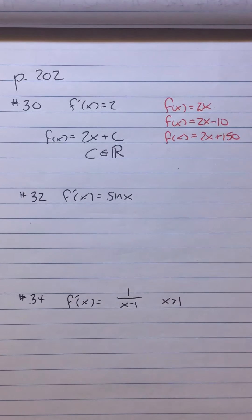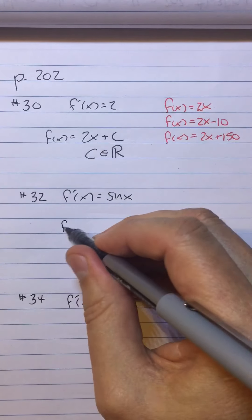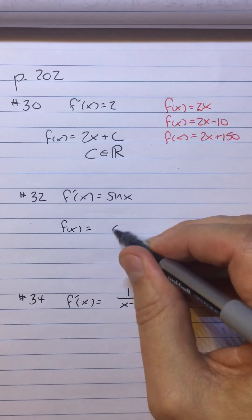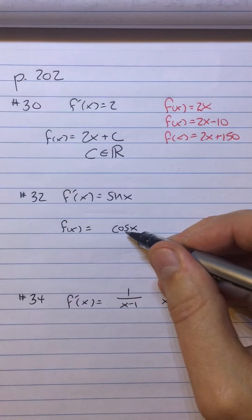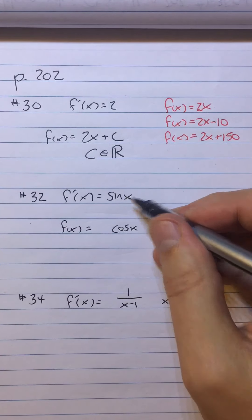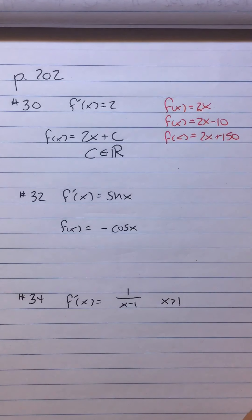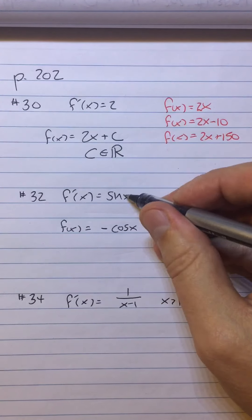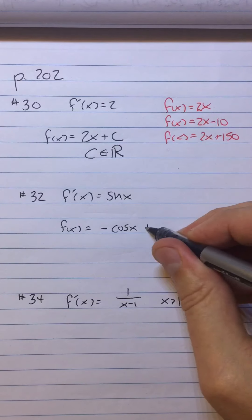All right, so how about this one? What's a function whose derivative is sine? Is it cosine? No, because the derivative of cosine is negative sine. So could it be negative cosine? Yeah, the derivative of negative cosine is, in fact, sine.